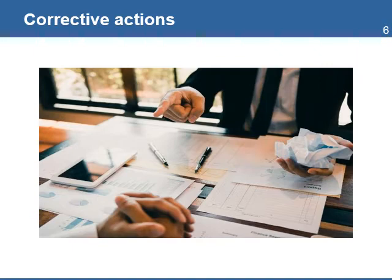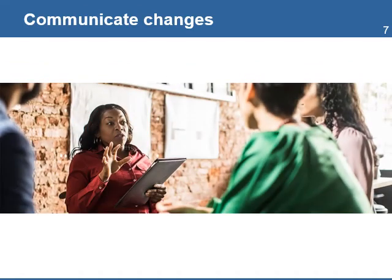Corrective actions should be discussed with the project team and the staff in charge of the activities so that changes can be implemented. All changes to the budget are to be communicated and incorporated into the system that tracks cost performance. Communicating the changes to the people that will use the information helps reduce the chances that work be done on canceled, postponed, or modified tasks.